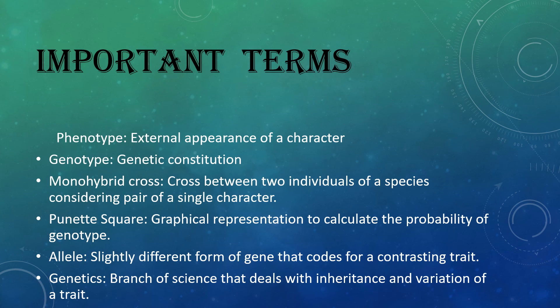In this chapter, we will study many terms. A few important ones are: phenotype, genotype, monohybrid cross, Punnett square, allele, and genetics. More terms will be covered in the next video.